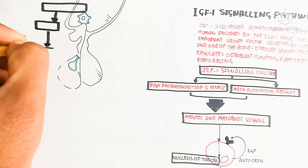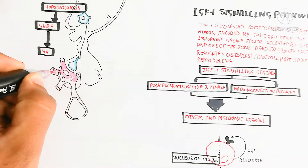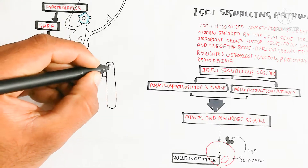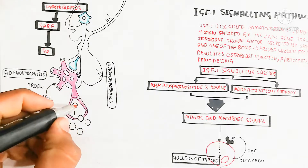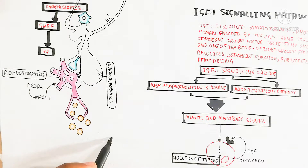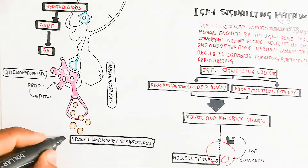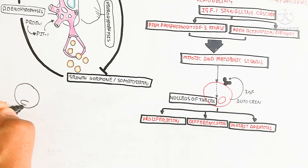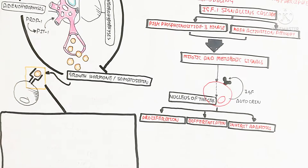Here I am drawing the hypothalamus and pituitary gland for understanding. Growth hormone is produced from the adenohypophysis, and Prop-1 and Pit-1 also stimulate growth hormone release from the adenohypophysis. The neurohypophysis is also shown. When growth hormone is overproduced, a negative feedback mechanism occurs; when levels are low in the blood, a positive feedback mechanism is triggered.